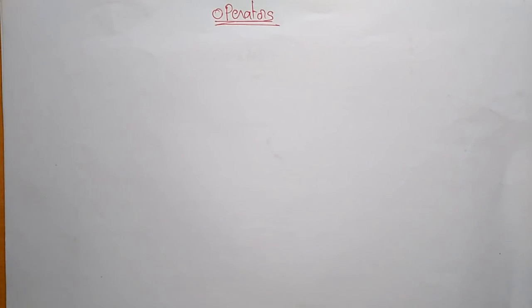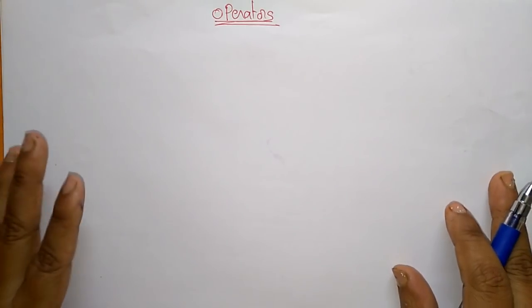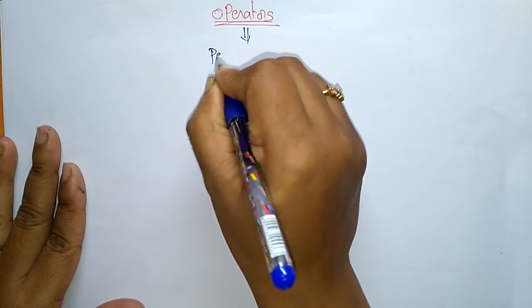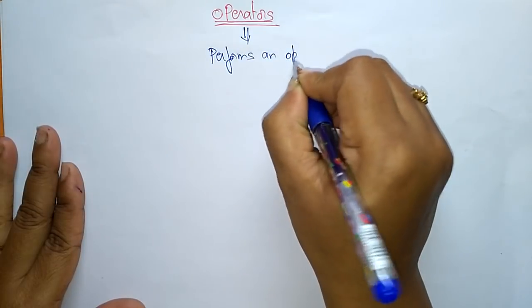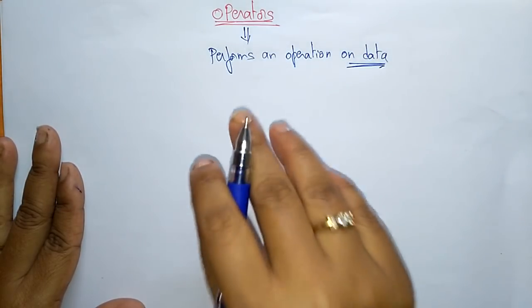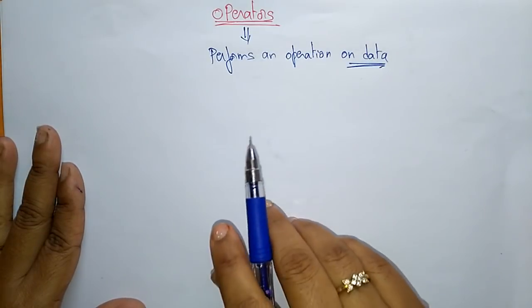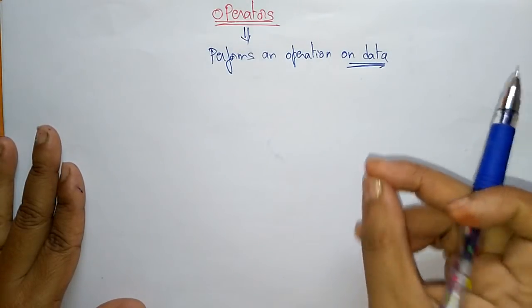Hi students, welcome back. Coming to the next topic in the subject computer programming: operators. Operators is one of the important concepts. If you want to do any arithmetic, logical, assignment, increment, or special calculations, you need to know about these operators. An operator performs an operation on data. For example, addition operation is performed on data, subtraction operation is performed on data.